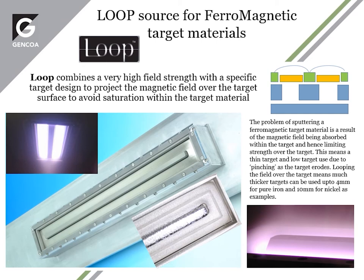Loop sources are a solution to the sputtering of ferromagnetic materials. We can sputter ferromagnetic targets with two-pole high-strength versions, but target use and thickness are very limited. A number of loop designs project the magnetic field over the target surface, using the magnetic material itself as part of the target. By projecting the field through to inner and outer poles, we can create the magnetron trap, sputter thicker targets, and achieve better target utilization — making sputtering of ferromagnetic materials much more efficient.